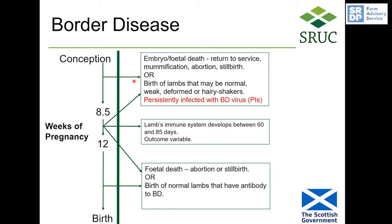If the lamb is born alive it may look normal, it could be weak, deformed, or you could have hairy shaker lambs — lambs that have an unusually rough fleece and are a bit trembly. All these lambs, whether they look normal or not, are persistently infected with border disease virus — so-called PIs. That's because the virus infected them before their immune system developed, so they don't recognise the virus as foreign. These are the most important animals when it comes to the spread of border disease both within a flock and between flocks.